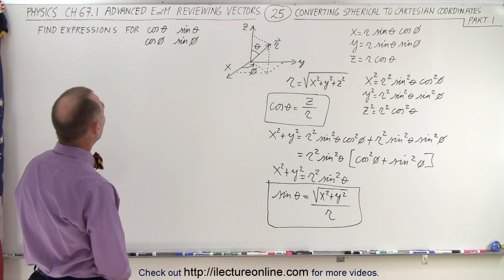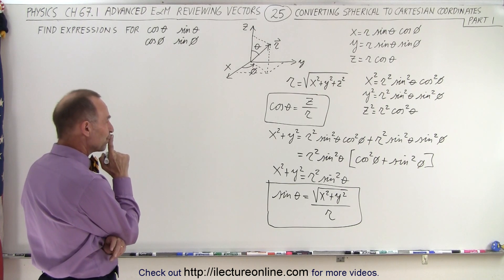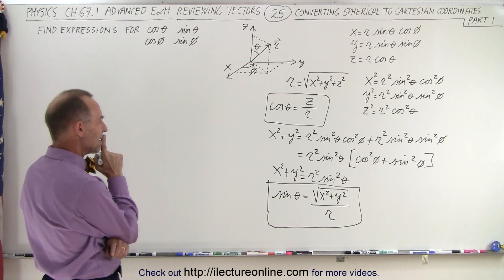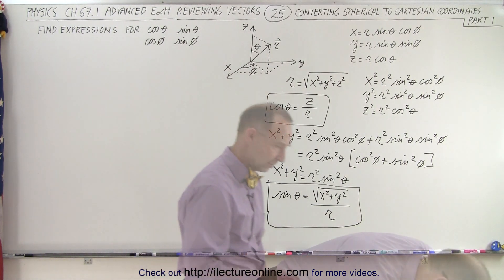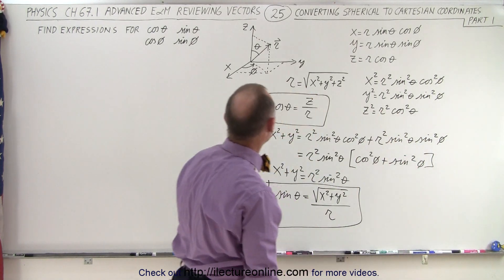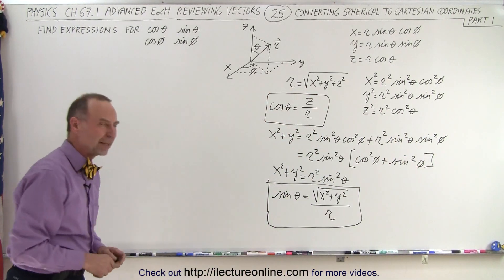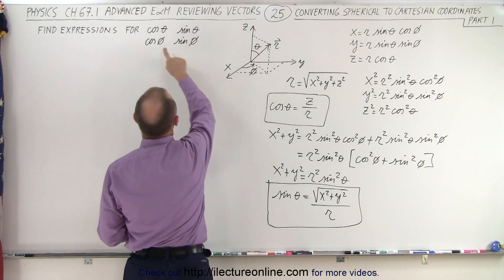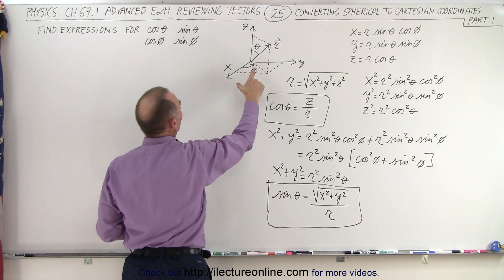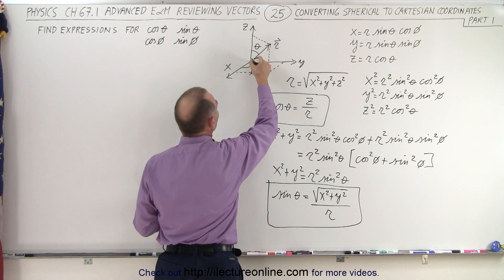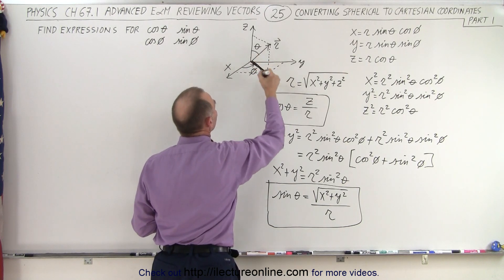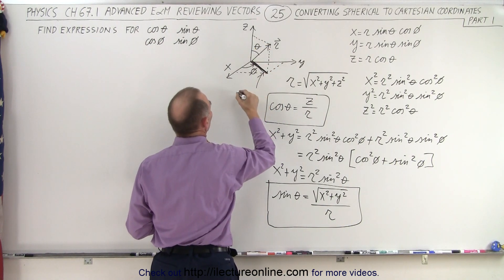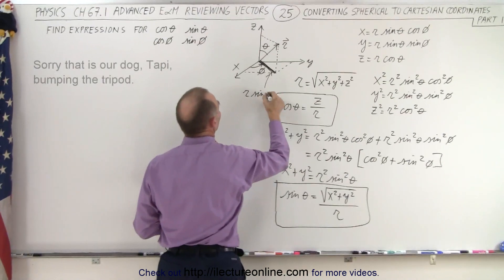Now we need to define the cosine of phi and the sine of phi. Looking at the diagram, to find cosine of phi and sine of phi, the key distance is r times the sine of theta — that serves as the hypotenuse in the xy-plane triangle. The adjacent side is x and the opposite side is y.